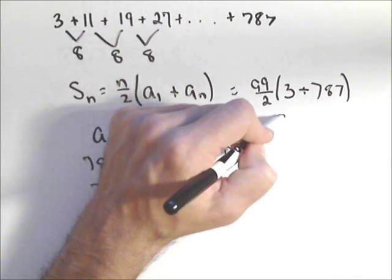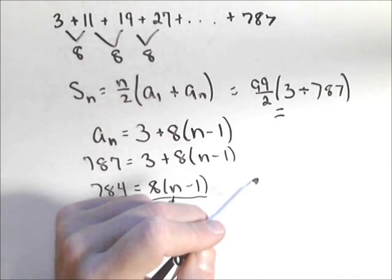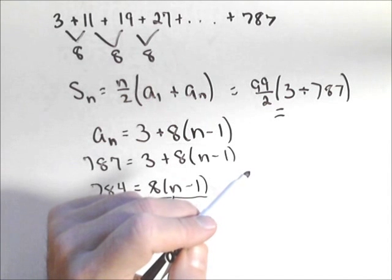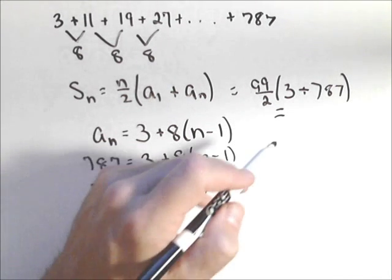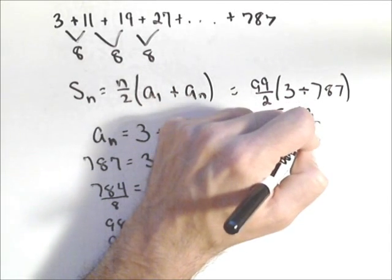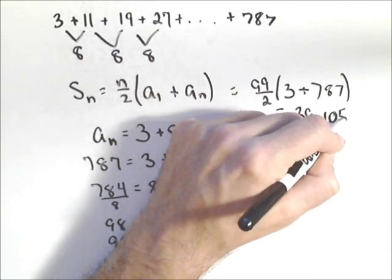And we can now calculate our sum. And we can just do it all at once. And we get 39,105.